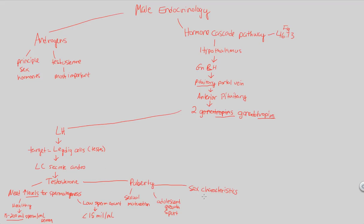Sex characteristics are broken down as either primary or secondary, both developing throughout puberty. Primary sex characteristics are those directly involved in reproductive organ development — the development of mature sperm, mature testes, and mature overall structures within directly involved reproductive organs. All the organs and structures discussed in the male reproductive system flowcharts will mature successfully as primary sex characteristics during puberty.